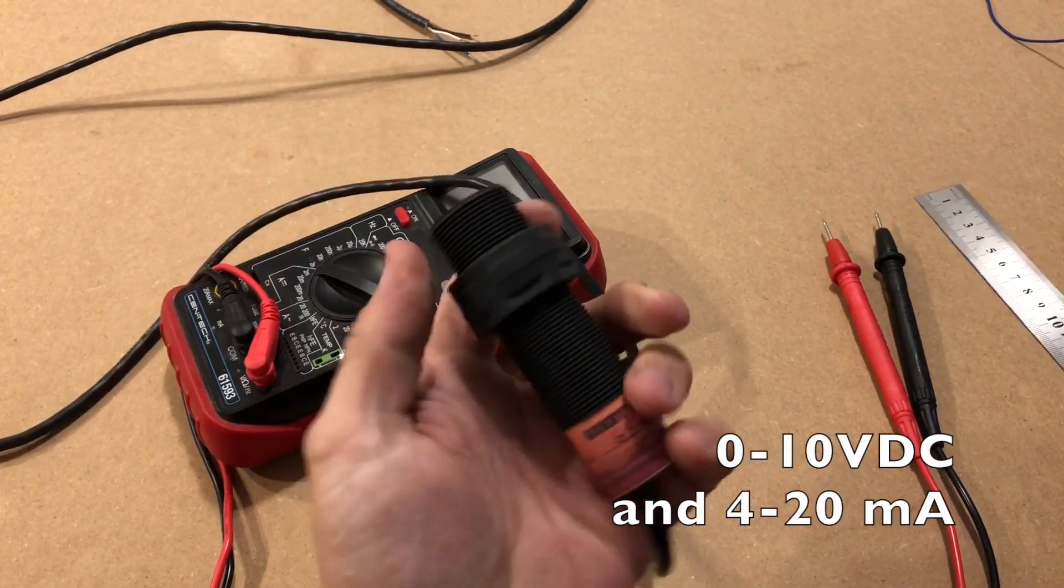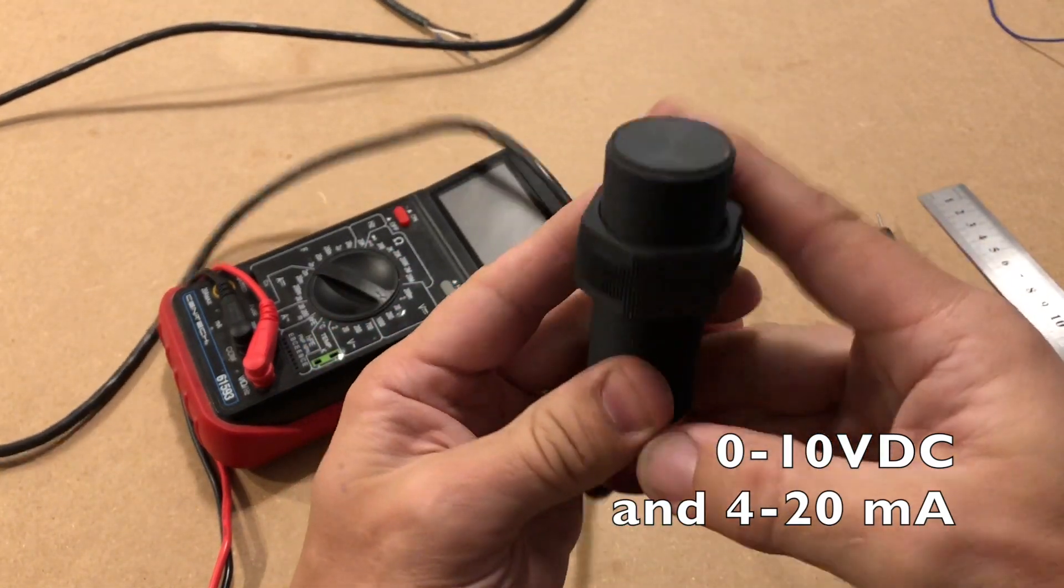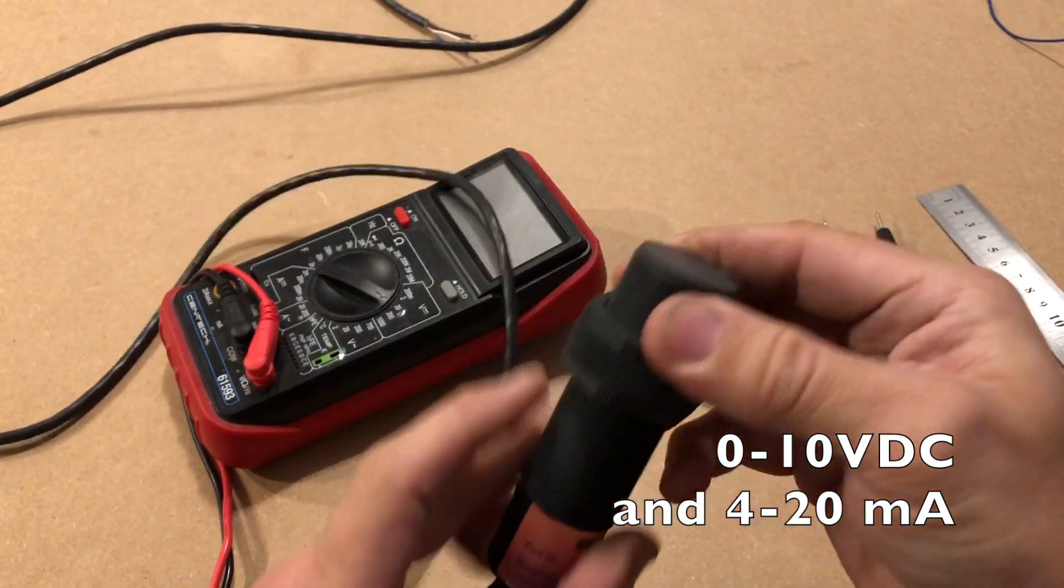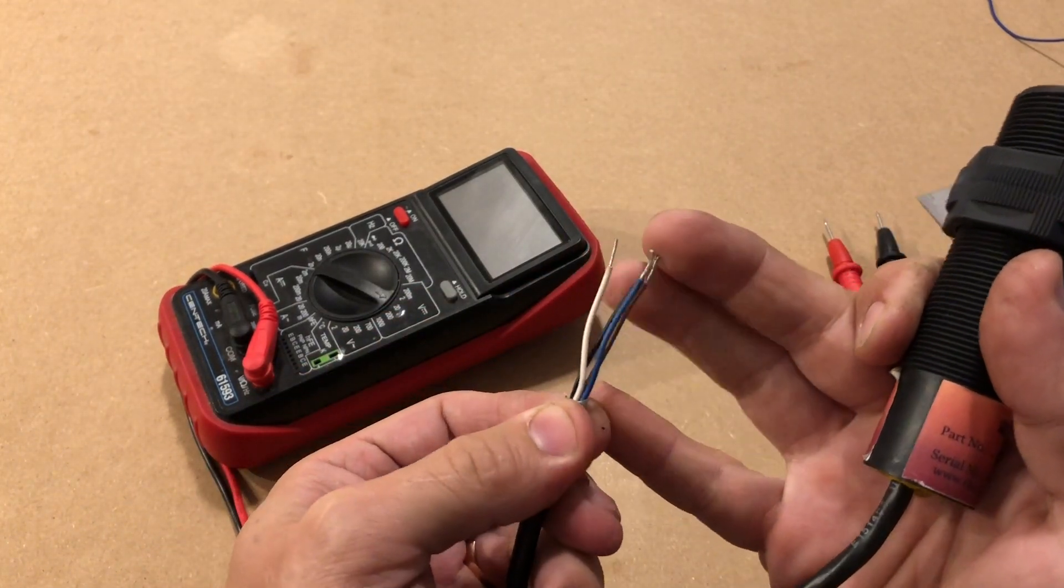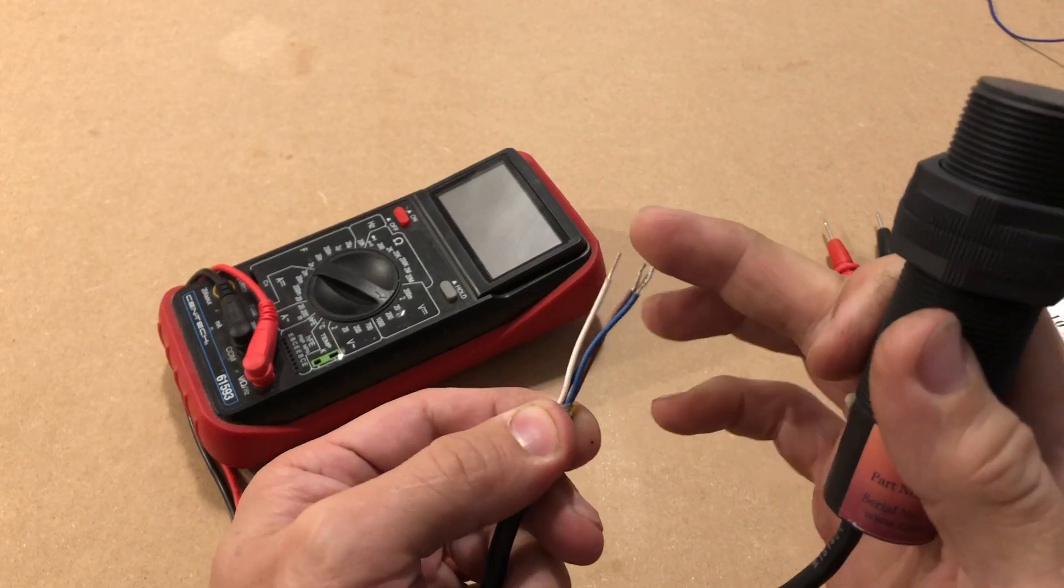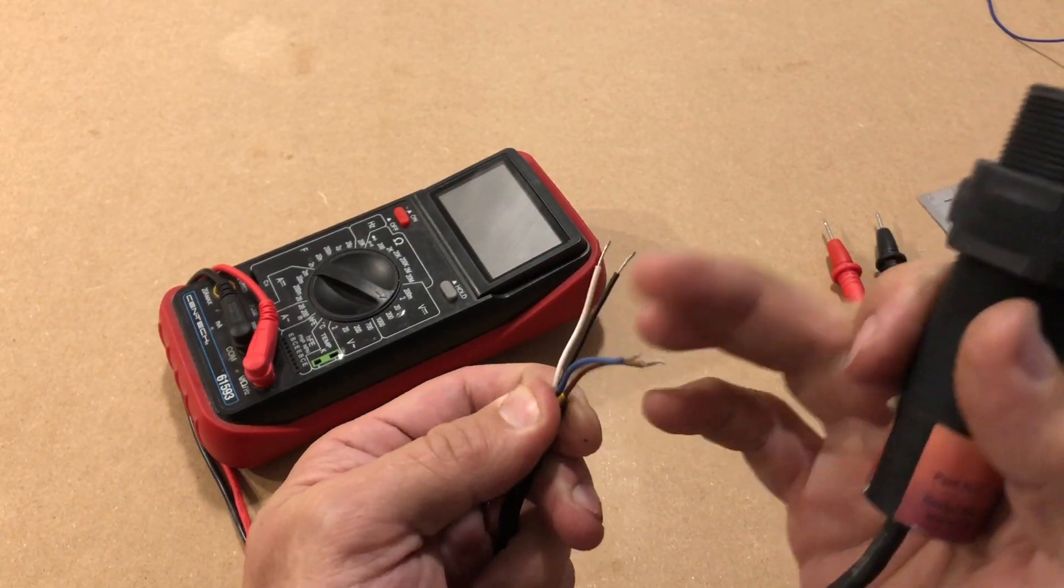The sensor features both 0 to 10 volt DC and 4 to 20 milliamp analog signals. When it comes to electronics, analog means a smoothly changing electrical value, sort of step-free variating.